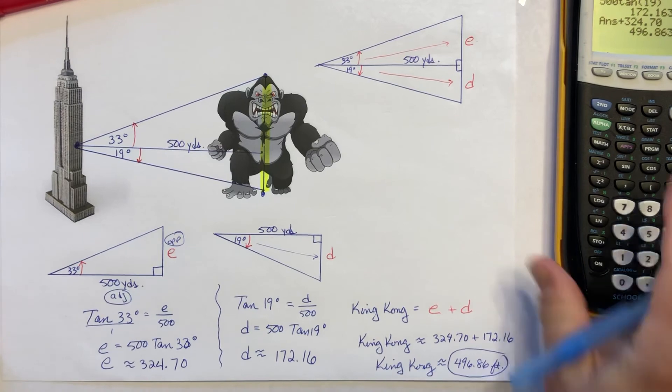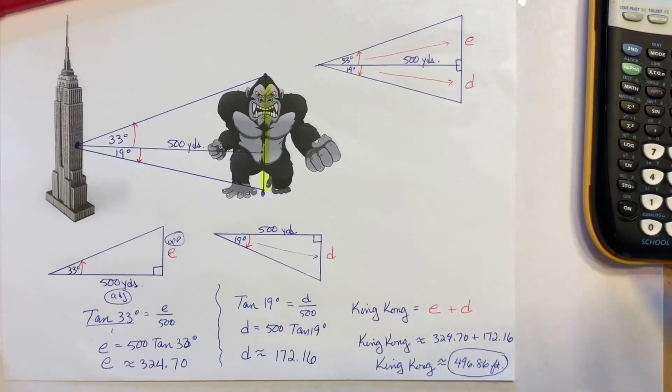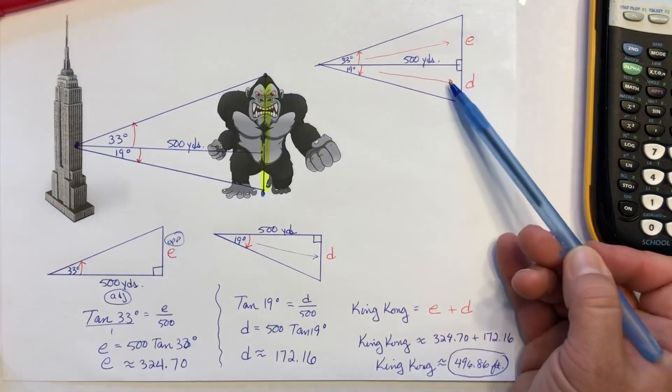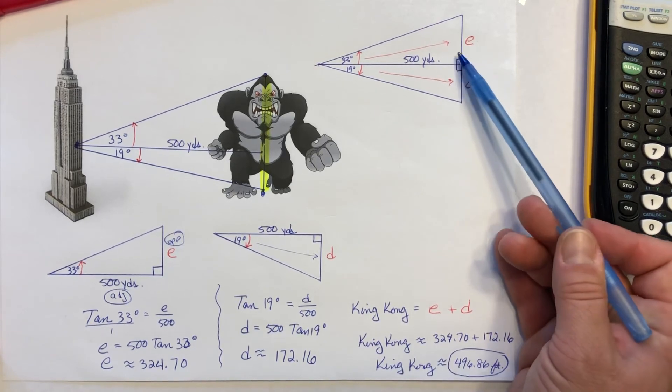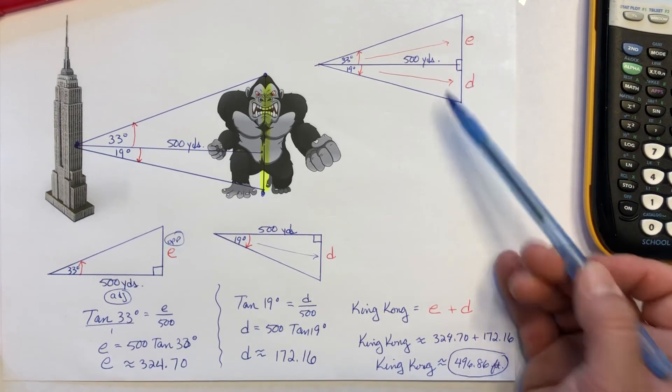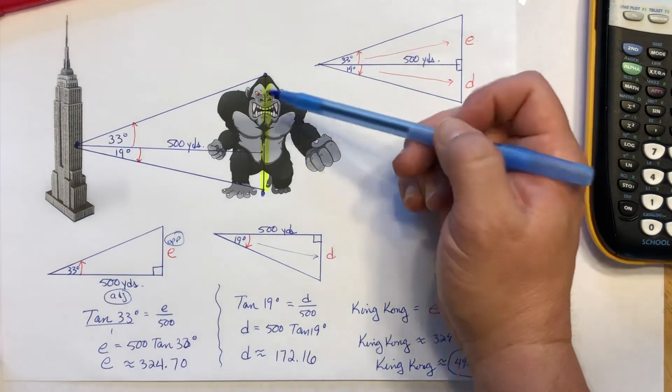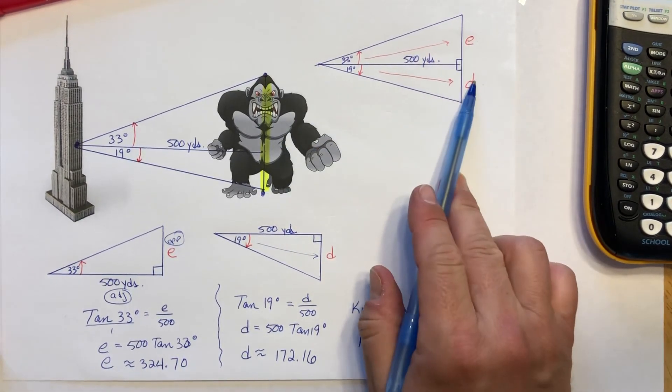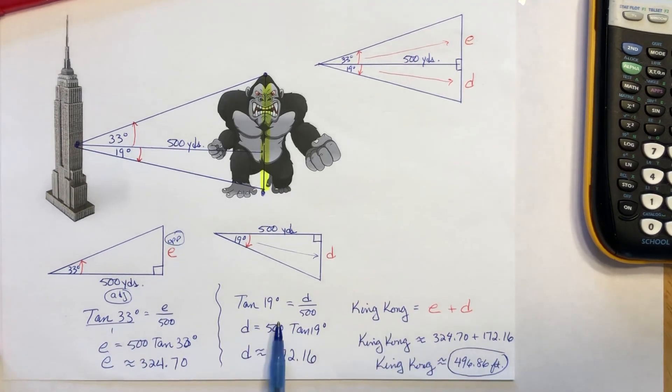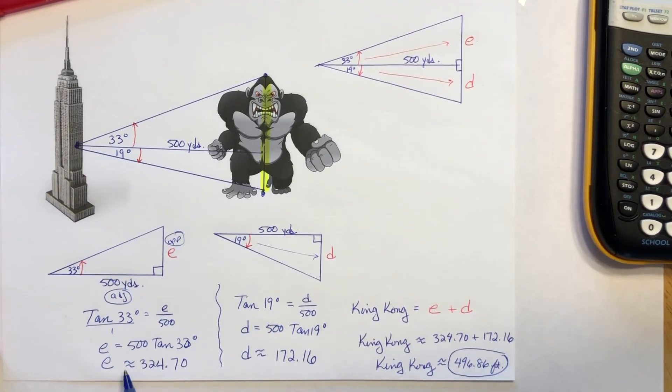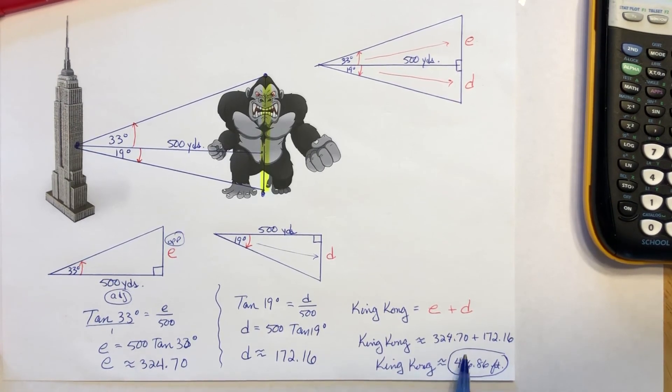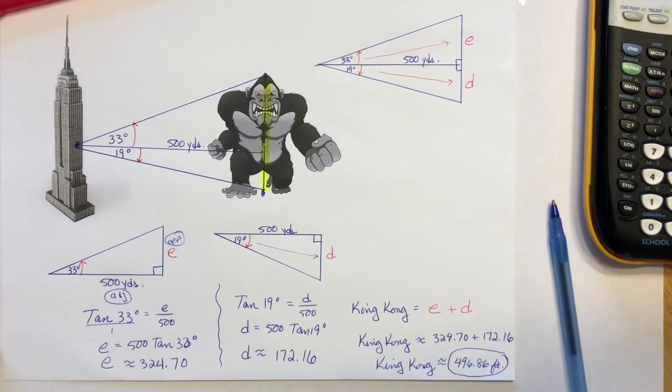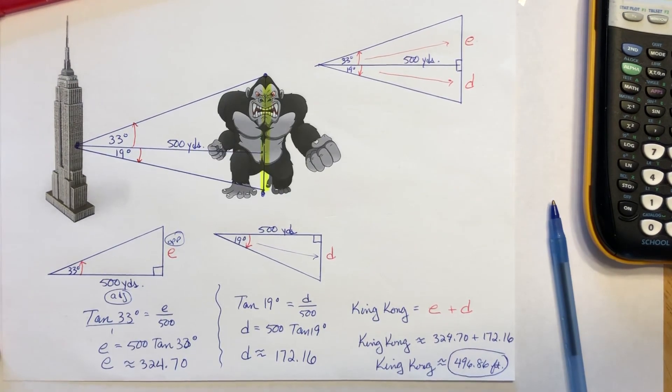All right. So ladies and gentlemen, quickly in summary, we had a large triangle, but we split it up into two pieces. Why? We're supposed to use SOHCAHTOA, so we need right triangles. His height is going to be broken up into two pieces. I called them E and D. I wrote a trig equation tangent for these two. I got each length by writing and solving trig equations like we practiced. I'm going to add the two together. All right. I hope this helps you for question number 11. Good luck and let me know if you have any questions.